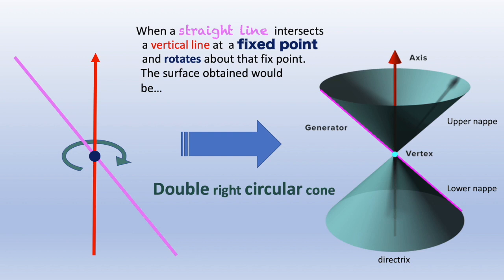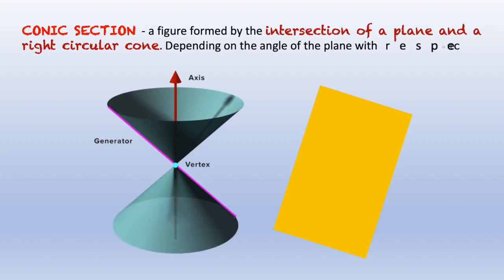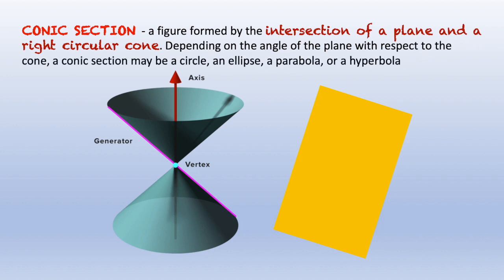Let's define what is a conic section. A conic section is a figure formed by the intersection of a plane and a right circular cone, depending on the angle of the plane with respect to the cone. A conic section may be a circle, an ellipse, a parabola, or a hyperbola.